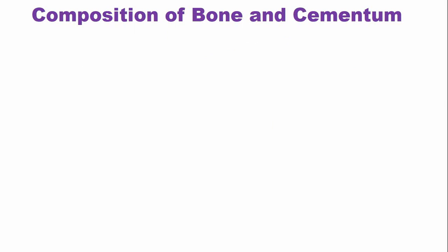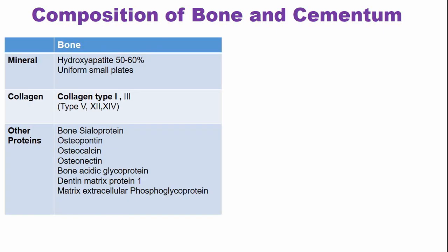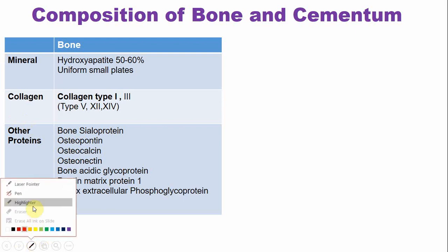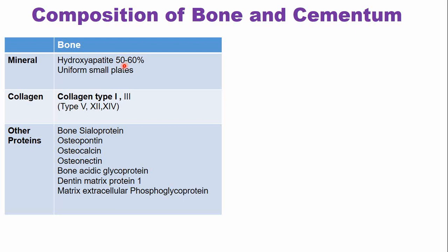Regarding the composition of bone and cementum, the two mineralized tissues of the periodontium: bone is 50 to 60 percent mineral, around 25 percent organic component, and approximately 15 percent water. The mineral component comprises hydroxyapatite crystals. The collagen is type 1 collagen with a smaller amount of type 3 collagen, as well as type 5, type 12, and type 14. Besides these collagen components, there are also non-collagenous proteins such as bone sialoprotein, osteopontin, osteocalcin, osteonectin, dentine matrix protein, and matrix extracellular phosphoglycoprotein.